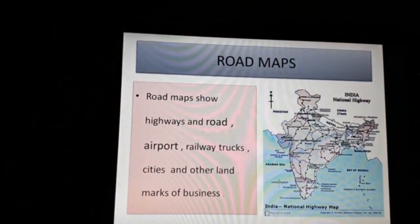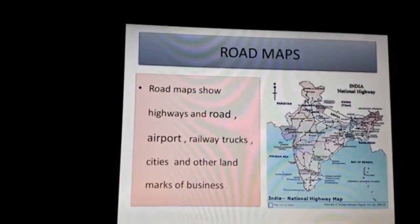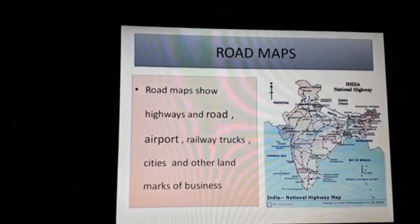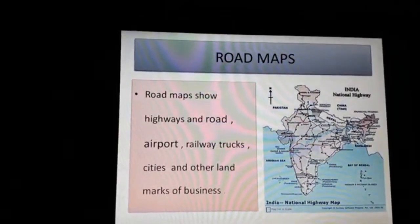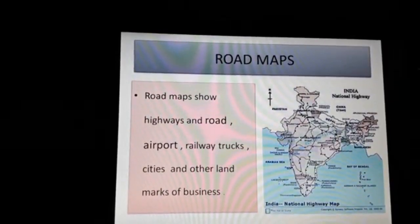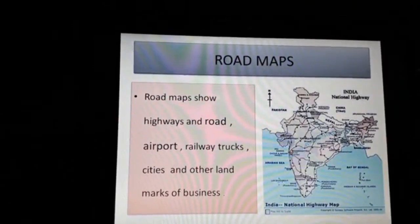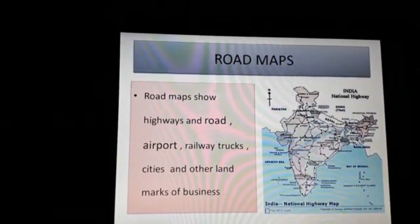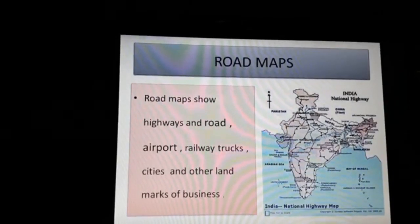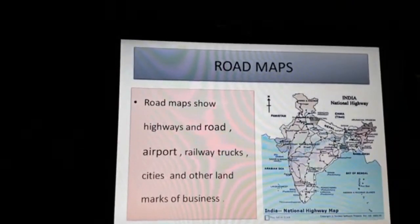Next, we learn about road maps. Road maps show highways and roads, airports, railway tracks, cities, and other landmarks. A road map or route map is a map that primarily displays roads and transport links rather than natural geographical information. Road maps show major roads and highways that connect different cities, help in giving people correct directions while driving, help people plan their routes, and help travelers reach a particular place easily.